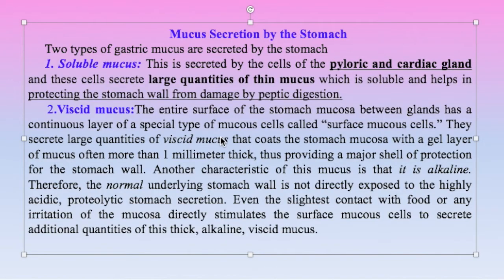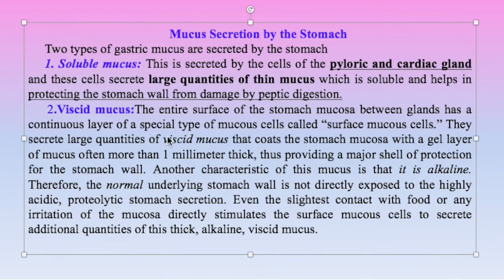To protect the stomach wall there are two types of mucus secretion. Soluble mucus is secreted by cells of the pyloric and cardiac glands; these cells secrete a large quantity of thin soluble mucus which helps protect the stomach wall from damage by peptic digestion. The second type is viscous mucus: the entire surface of the stomach mucosa between the glands has a continuous layer of special surface mucus cells. They secrete this viscous mucus in large quantities to coat the stomach mucosa with a gel layer of mucus often more than one millimeter thick.